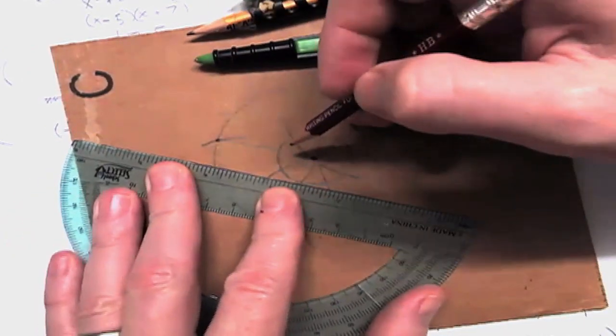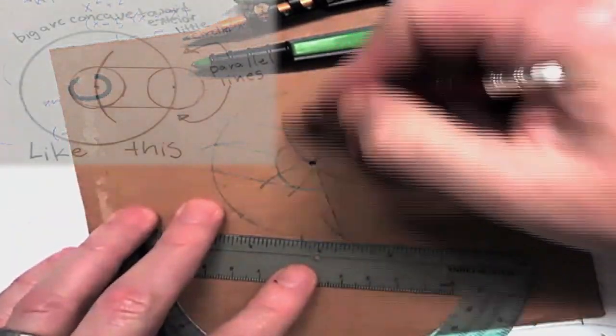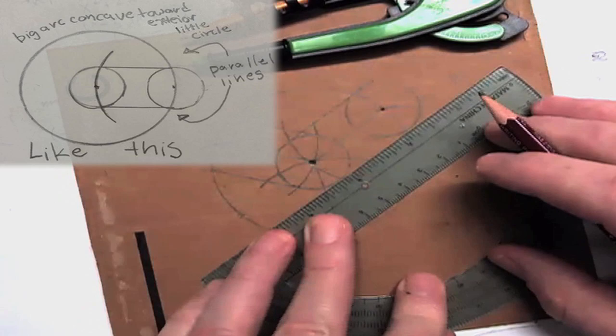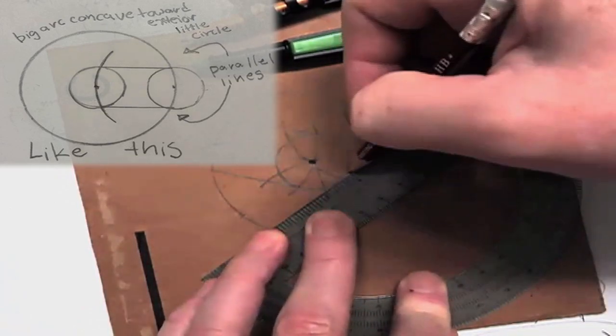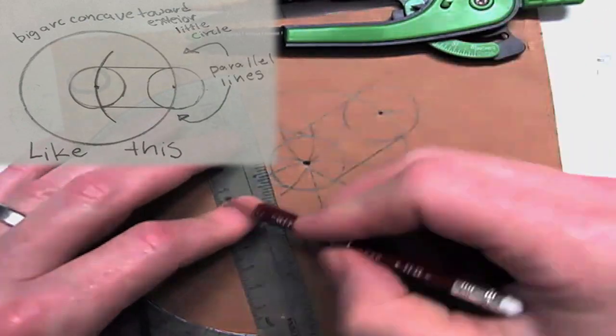So what I'm doing now is I'm connecting those marks with the concave part. The one that's the part of the circle that's going towards the circle, the one that's concave towards the circle, I'm going to connect the intersection points.